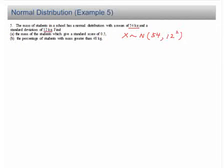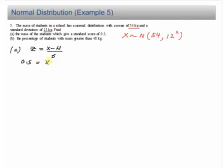Find the mass of students which gives a standard score of 0.5. This is straightforward if you know the relationship between the z-score and x, that is z equals x minus mean over the standard deviation. Given that your z-score is 0.5, you have to find the value of x, which is the mass of the students, minus the mean of 54.